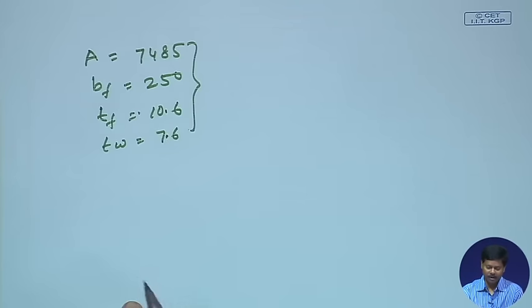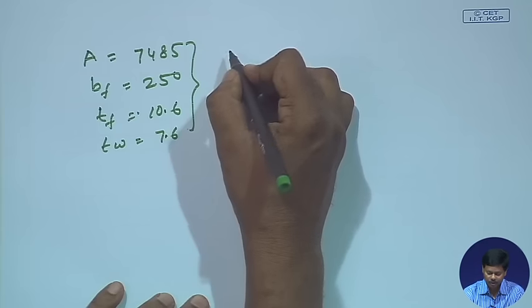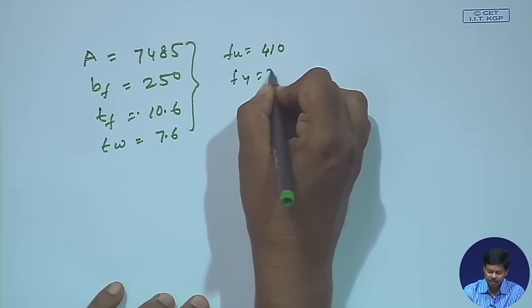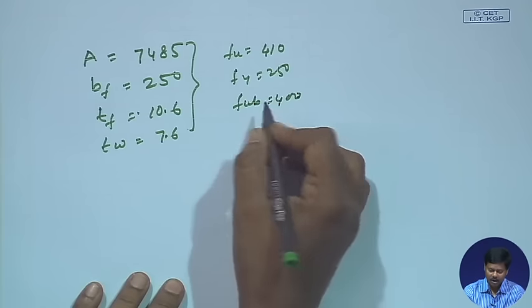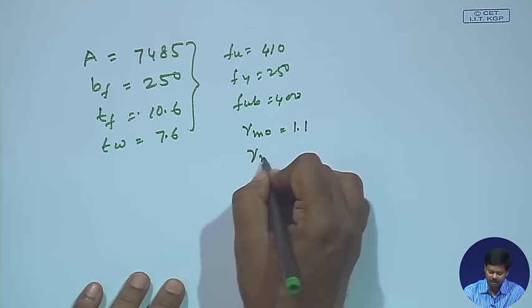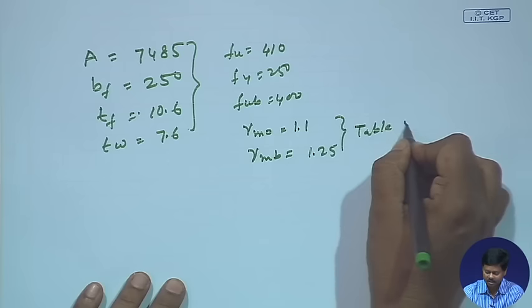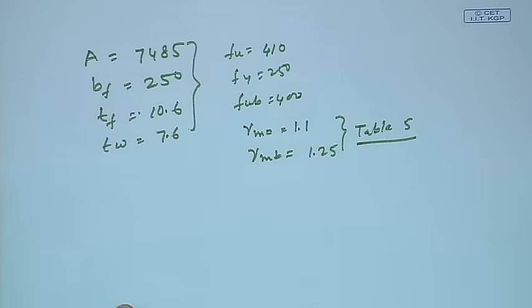For ISHB 300, the cross-sectional area is 7485 mm², flange width bf is 250 mm, flange thickness is 10.6 mm, and web thickness is 7.6 mm — obtained from SP 6 tables. For Fe 410 grade steel, Fy = 250 MPa. For 4.6 grade bolt, FuB = 400 MPa. Partial safety factors: γM0 = 1.1 and γMB = 1.25 from Table 5 of IS 800:2007.